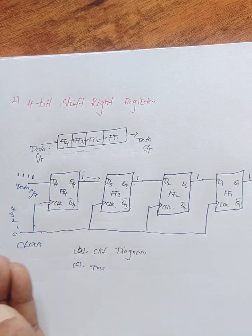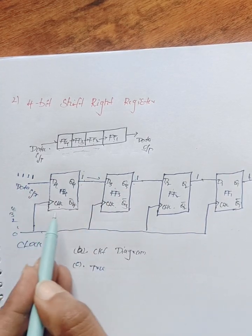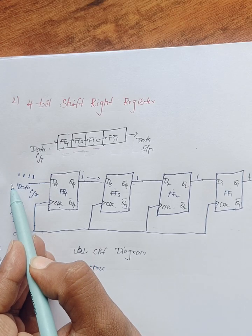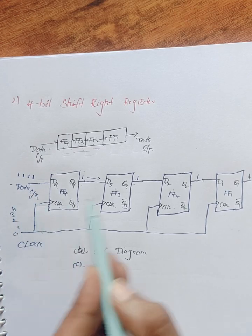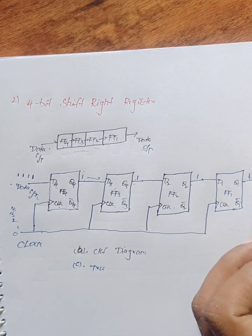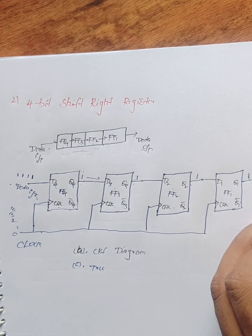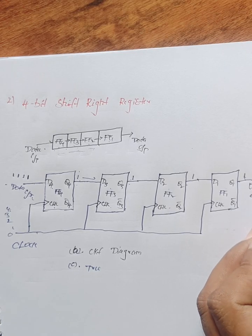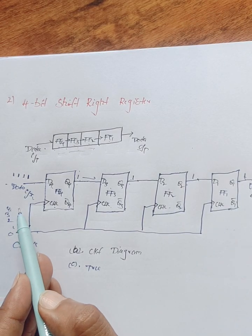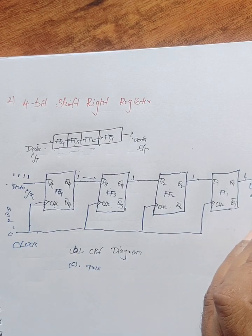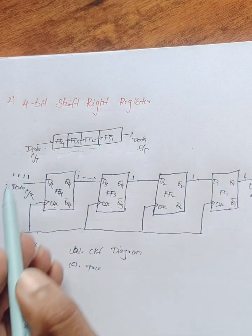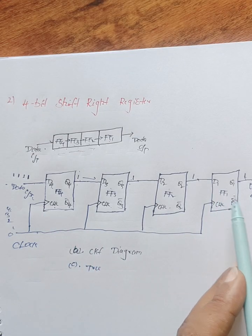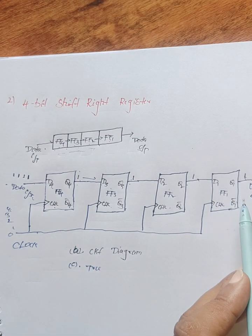You can observe that data started at the left side of the circuit and moved towards the right side. This is the data output — started at the left side moving towards the right side — and the entire register is called a 4-bit shift right register.